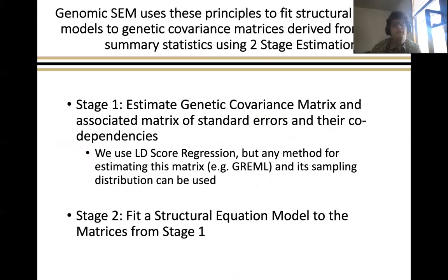What Genomic SEM does is it uses the principles of structural equation modeling to fit a model to the genetic covariance matrix. So it's a two-stage process where in stage one, that genetic covariance matrix and its associated matrix of standard errors and their codependencies are estimated, where we specifically use LD score regression. And in stage two, we fit that structural equation model to the matrices from stage one using Lavaan and the basic principles of structural equation modeling.